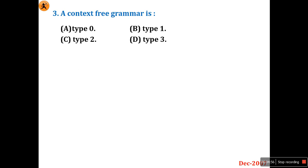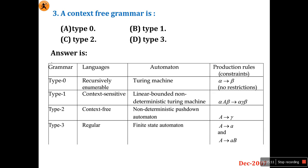Question 3: A context-free grammar is — Type 0, Type 1, Type 2, or Type 3? This is an important question related to theory of computation. Just remember this table: Type 0 is recursive enumerable language, read by a Turing machine with no restriction on production rules.